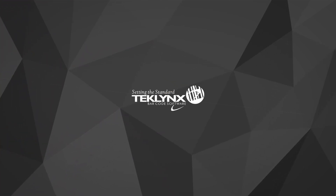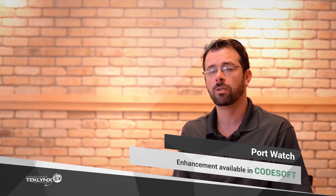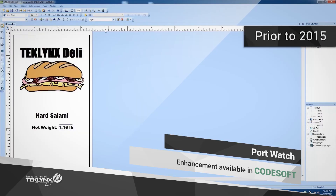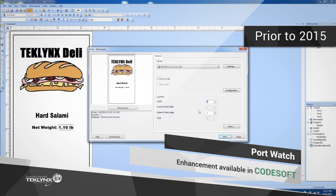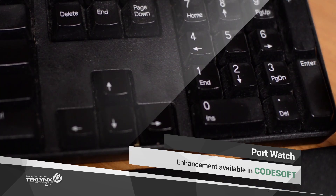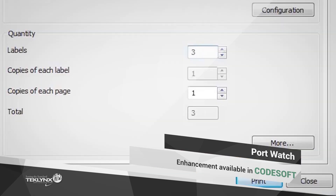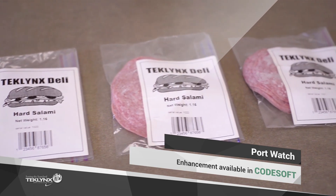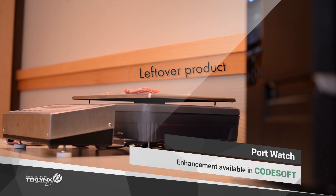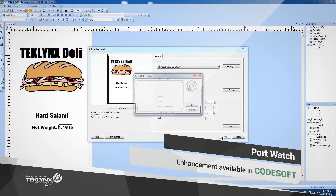When speaking with customers that use weighing scales — primarily those in the food and manufacturing industry — we knew there was an opportunity to improve their experience in Codesoft. We recognized that the process required users to first enter a quantity of items to be weighed and labeled, when many times users were unaware of this specific quantity. This resulted in users having to complete the process multiple times, resulting in user frustration, wasted time, and label stock.